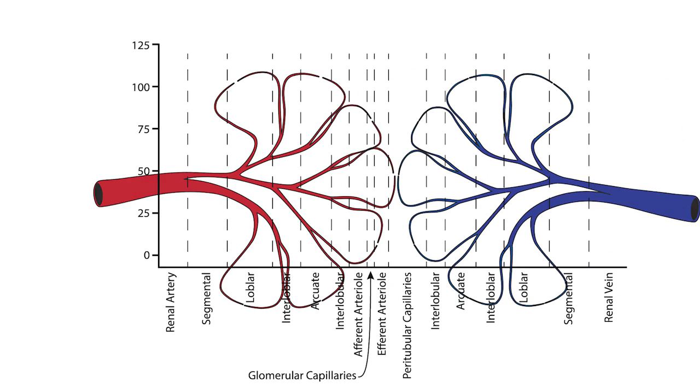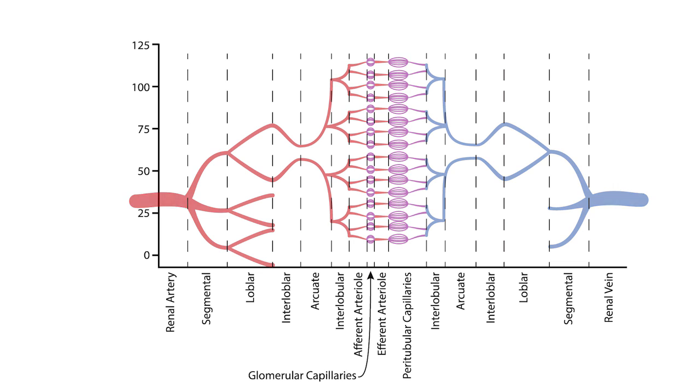Now we're ready to address our original question. Let's do so by following the pressure changes in millimeters of mercury along the renal vasculature. Blood enters the kidney with an average pressure of 100 millimeters of mercury.